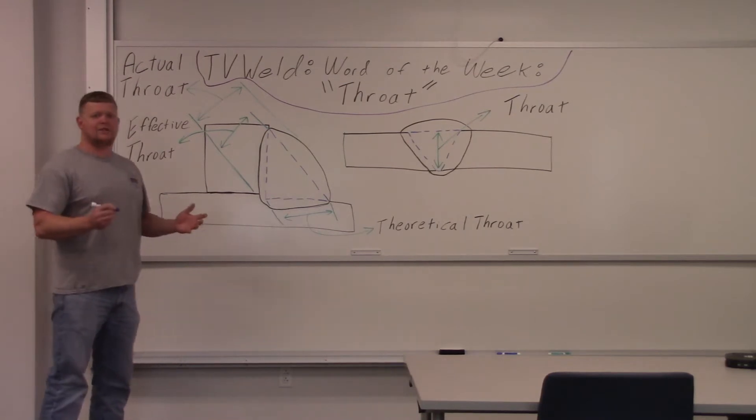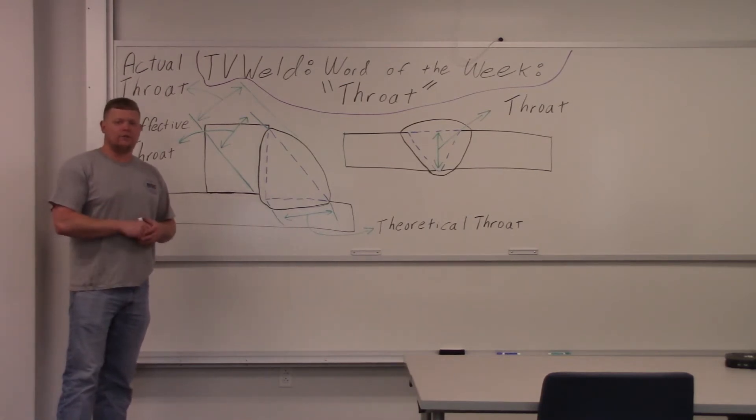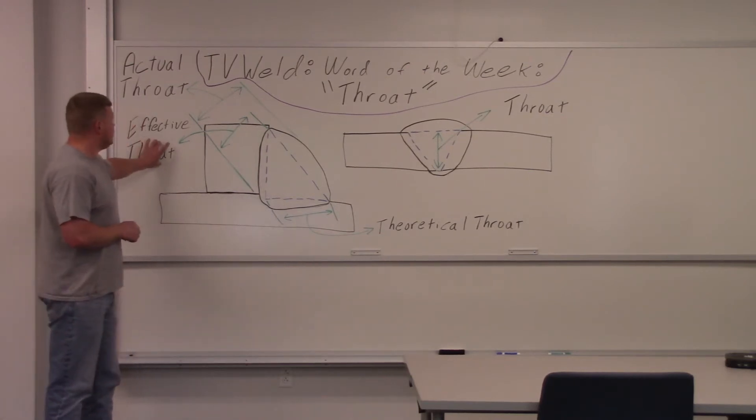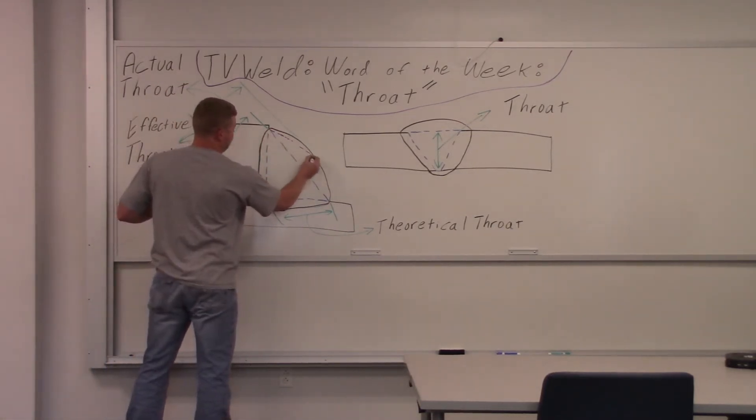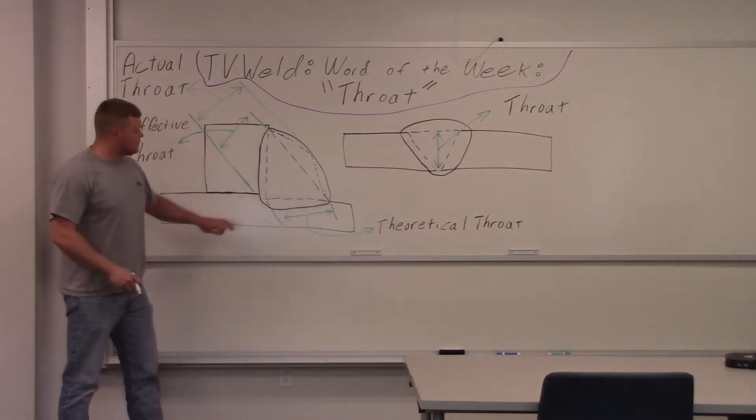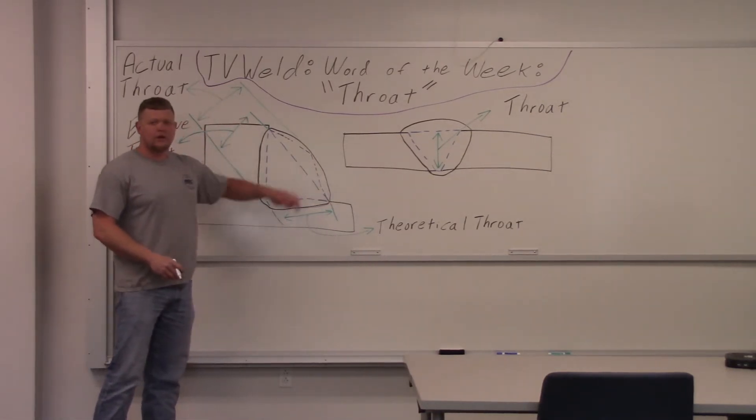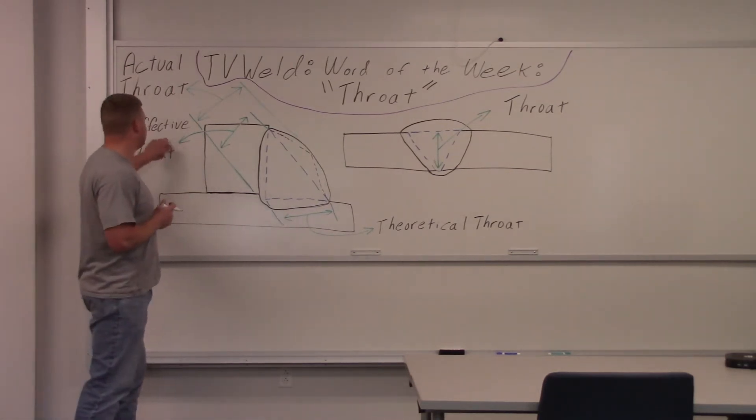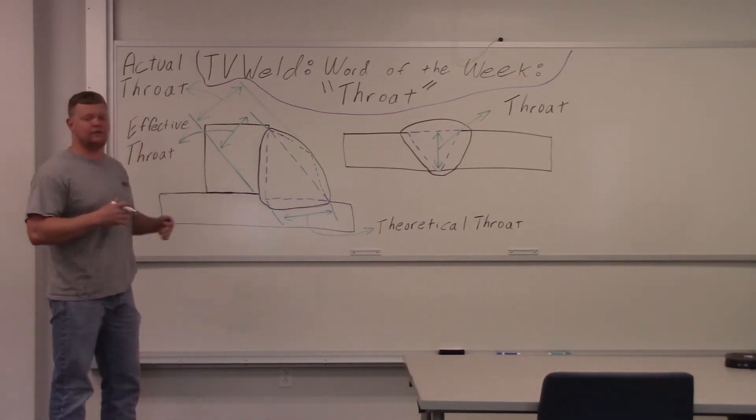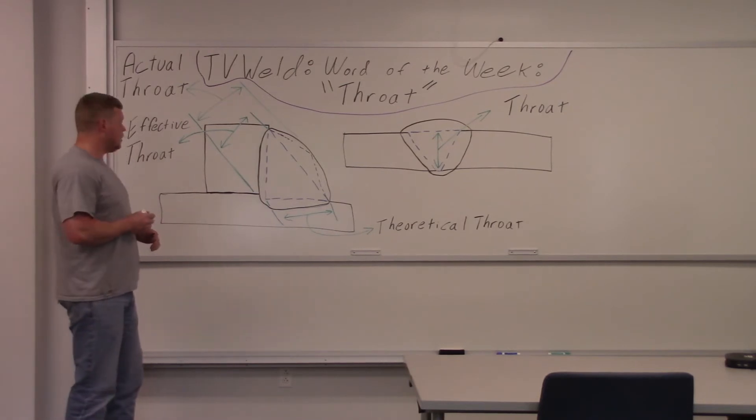Most calculations, if you're doing weld size or bead size for a fillet weld, are going to come off this effective throat. You can go into the actual throat and what they'll do is they'll break that into a triangle. So you're going to lose a little bit here. They're going to take it like this. They're going to make a triangle. They're going to use the trig. And this does give you a little bit more strength. But for the most part, it's usually calculated through the effective throat if you're looking to figure out how big a fillet weld needs to be for whatever application you're using.